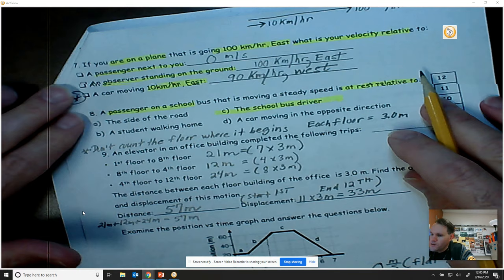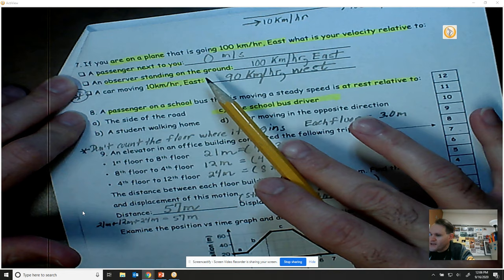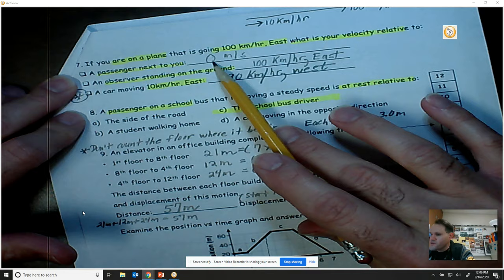Number 7 says, if you're on a plane that is going 100 kilometers per hour east, what is your velocity relative to a passenger next to you? Well, you're both on the plane, so if you're looking at that passenger, they're not moving, so therefore their relative velocity is going to be zero.